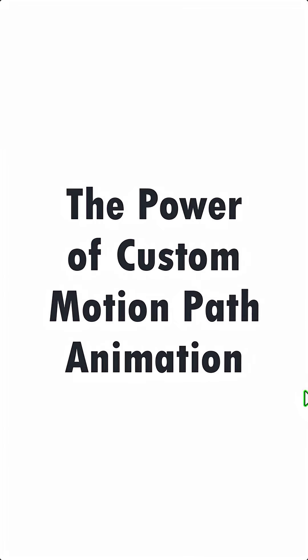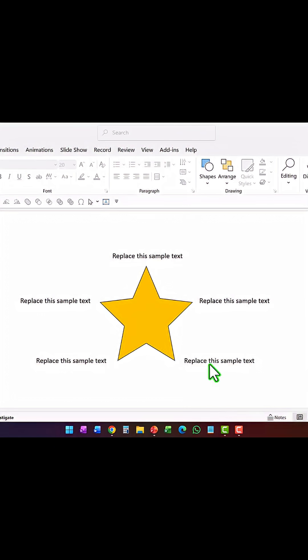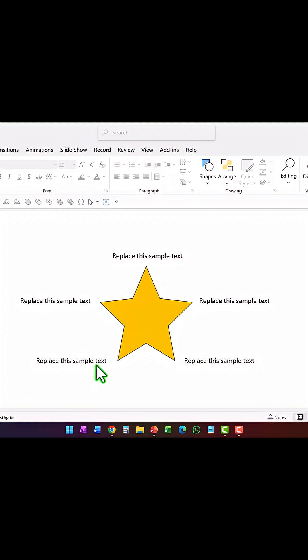Let us understand the power of custom path animation. Let's say you want to talk about the five characteristics of a five-star service with a visual graphic like this, where each corner of the star represents a certain characteristic. We can use custom animation to highlight one point at a time.